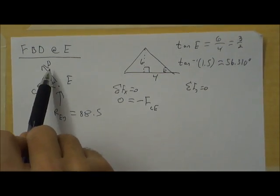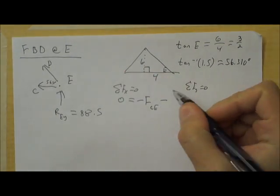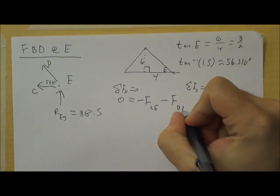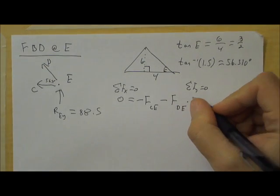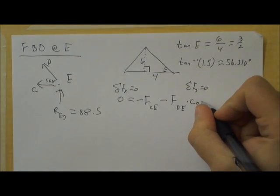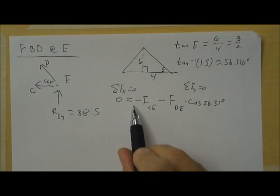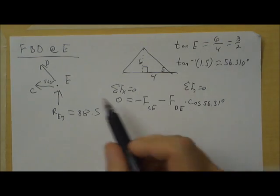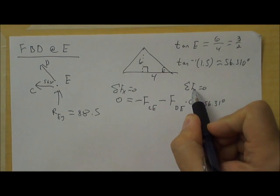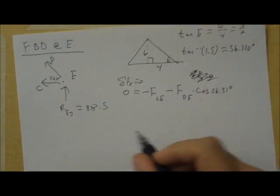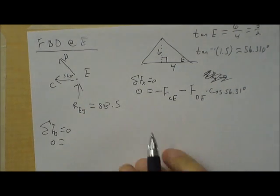And then, the force of DE is partially going in the x direction to the left. Again, left, so minus force DE. But we only want the part of it that's going to the left. So, we need to multiply it by cosine 56.31. Alright. And we don't know either of these, so we have to stop there. There aren't any other horizontal forces. So, we go to the forces in the y direction.